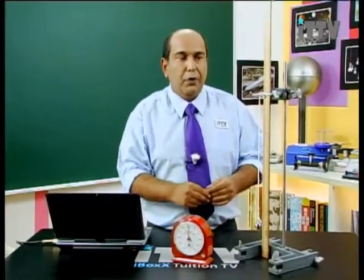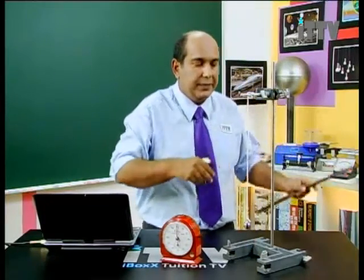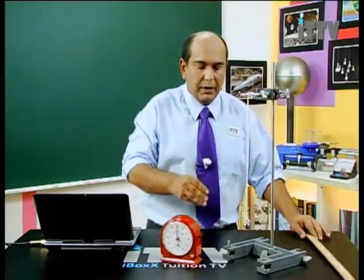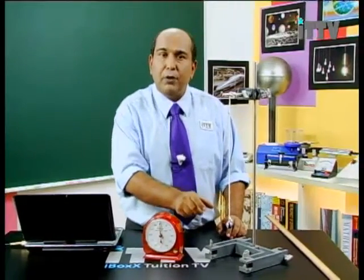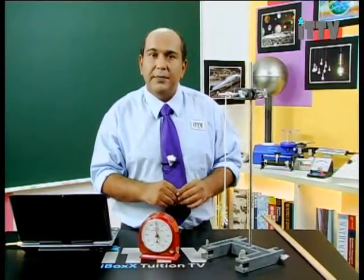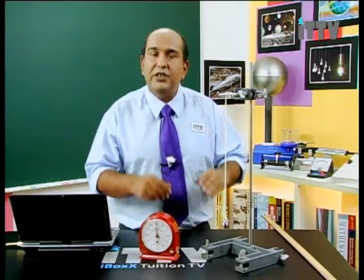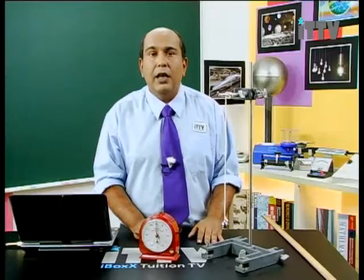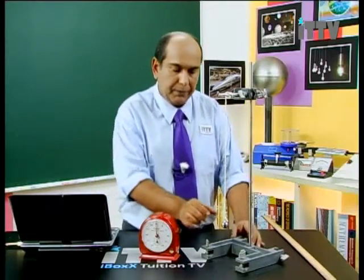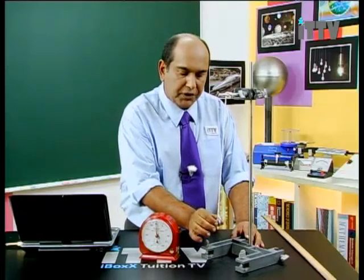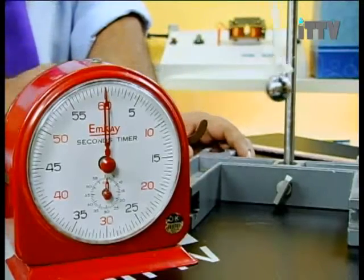Here we have our pendulum bob and our stop clock. I'm going to move the pendulum bob through a couple of degrees, release it, and let it start swinging. Once it's evenly swinging, I'm going to start the clock and record the time for 20 oscillations.